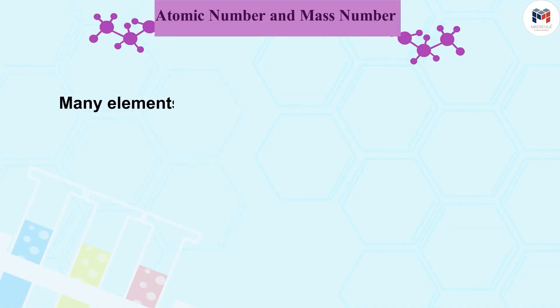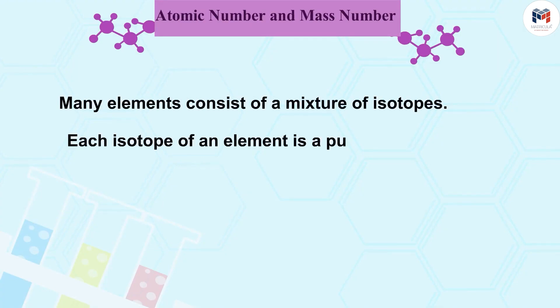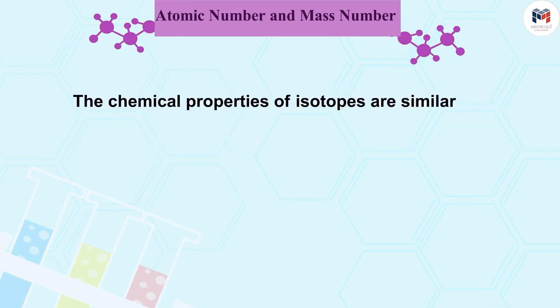Many elements consist of a mixture of isotopes. Each isotope of an element is a pure substance. The chemical properties of isotopes are similar but their physical properties are different.